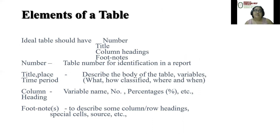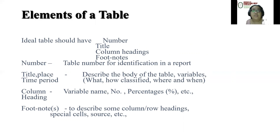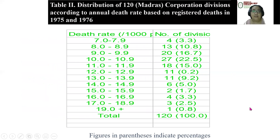In a table, it is important to look at the elements. Ideally, a table should have a number, title, column headings, and footnotes. The number is for identification in a report. The title describes place, time, and period — the variables, what was classified, where, and when. Column headings should include variable name, number, percentages, etc. Footnotes describe columns, row headings, special cells, and source. You would see that a complete table has the title, column headings, and footnotes.